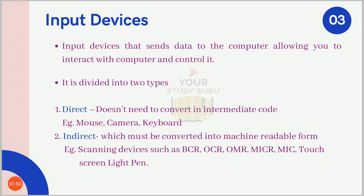The second type is indirect input, which must be converted into machine-readable form. Examples include scanning devices — when you scan a paper, it must be converted into digital form. Devices in this category include BCR, OCR, OMR, MICR, touchscreen, and light pen. These devices perform conversion before the input is usable.